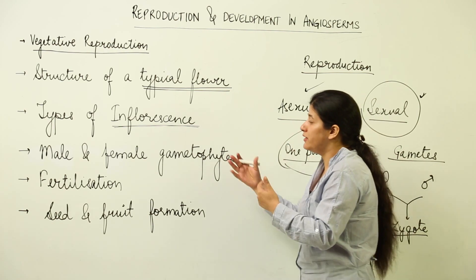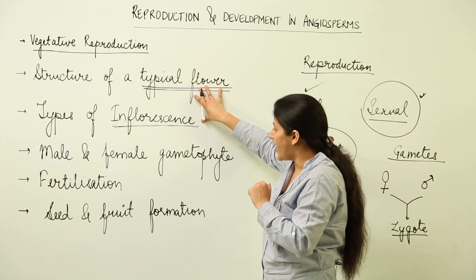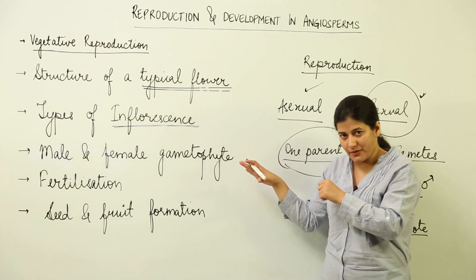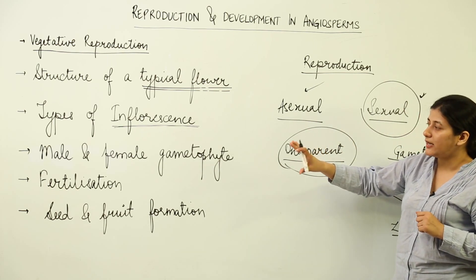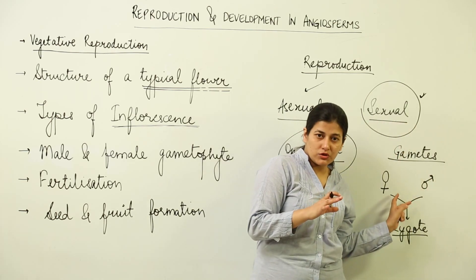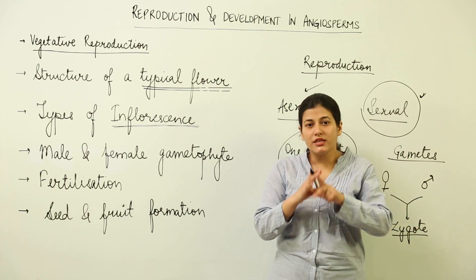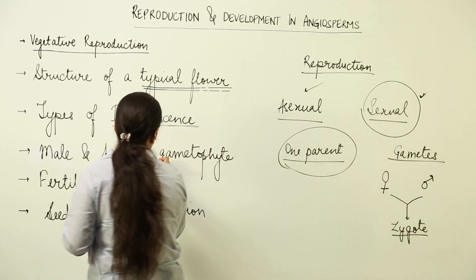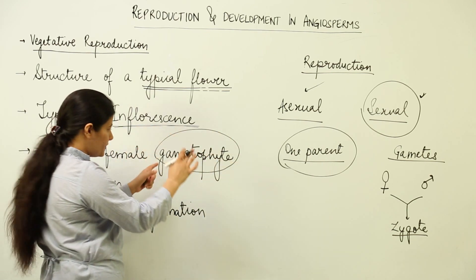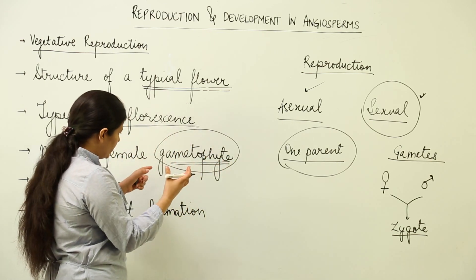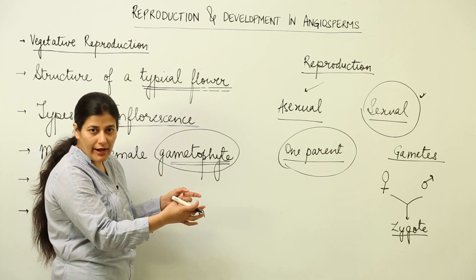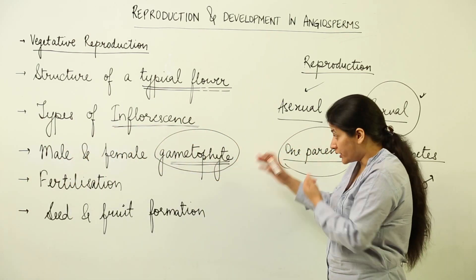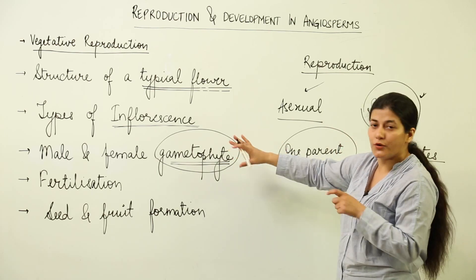Once we are well versed with the flower, we will come to the sites where the male and female gametes are formed inside the flower. The flower is the site of sexual reproduction in a plant. The region within the flower responsible for giving rise to gametes is known as the gametophyte. Gametophyte is that particular region or cellular arrangement within the flower which gives rise to male and female gametes. We are going to study the male and female gametophyte and their structures, and how they are formed.